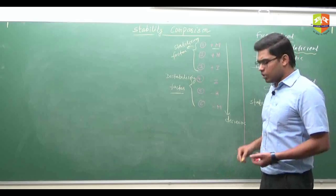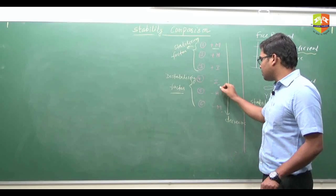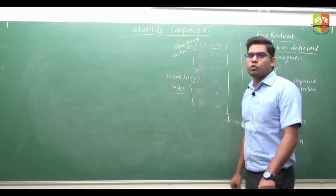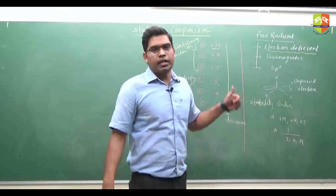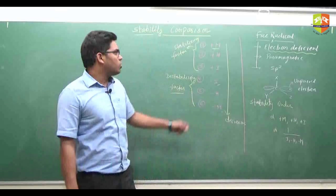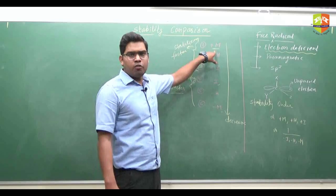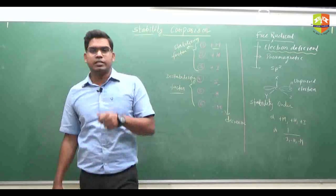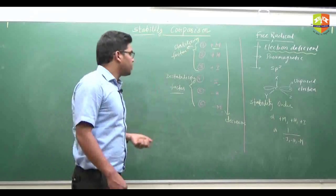If you have two compounds — one showing -I effect and another showing -M effect — the compound with -I effect is more stable, because -M destabilizes more. If compounds show +M and +H effect, the compound with +M effect is more stable than the compound with +H effect. This order you have to keep in mind.